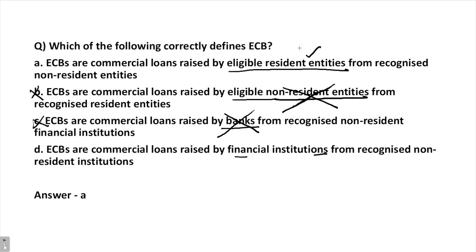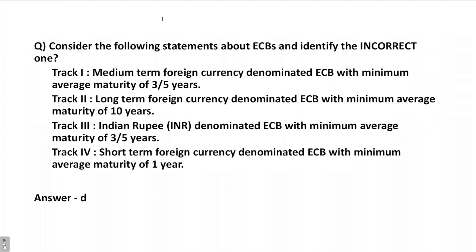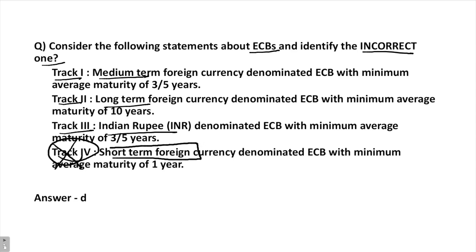So options B and C are eliminated. The correct answer is: ECBs are raised by eligible resident entities from recognized non-resident entities, rather than from recognized non-resident institutions, because 'institutions' excludes certain classes of enterprises. Next question: Consider the following statements about ECBs and identify the incorrect one. Track 1 is medium term, Track 2 is long term, Track 3 is Indian rupee denominated. There is no Track 4. ECBs cannot be short term — they can only be medium term, long term, and Indian rupee denominated.